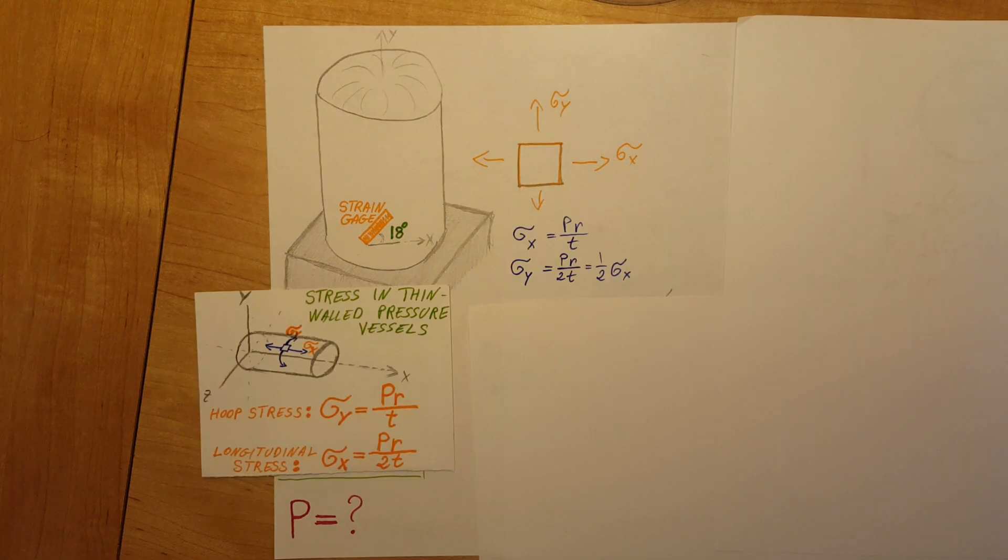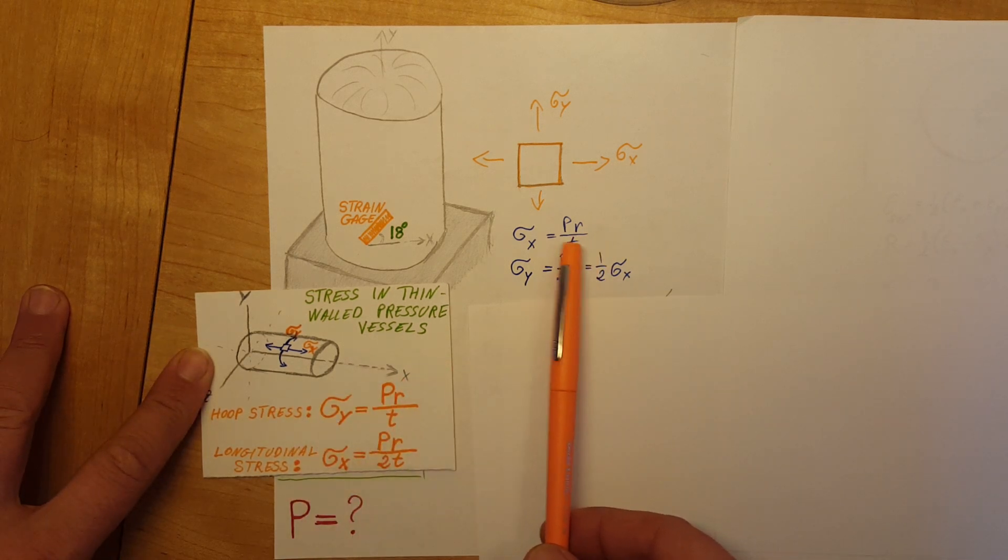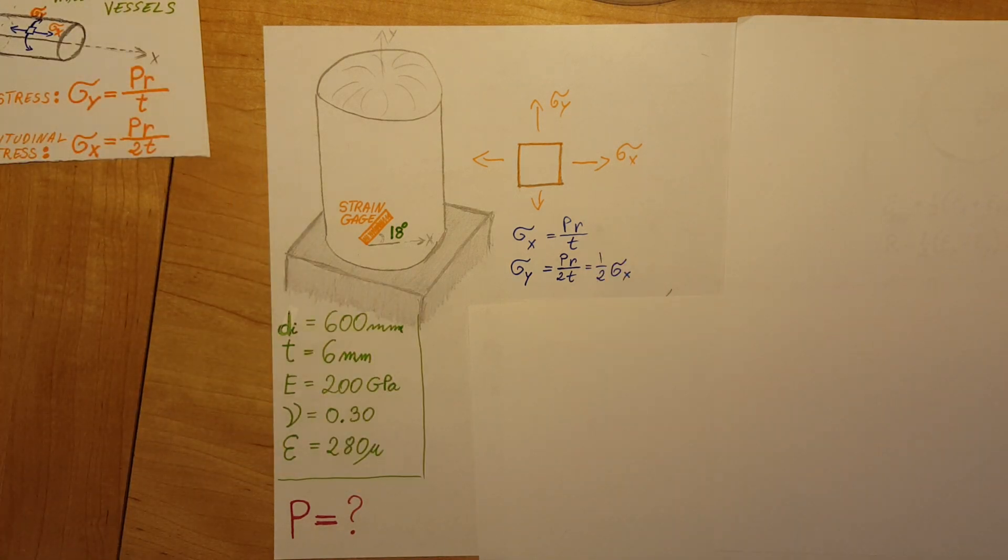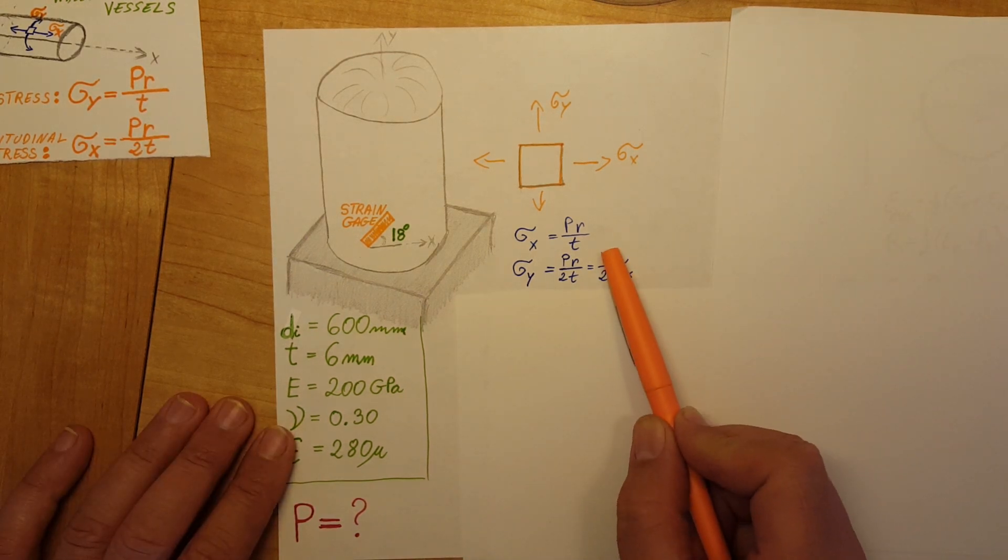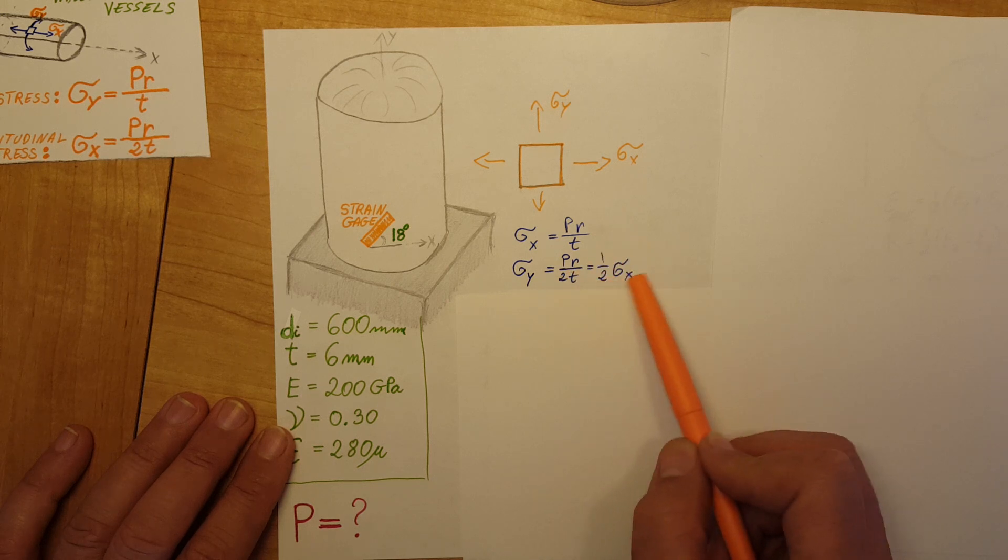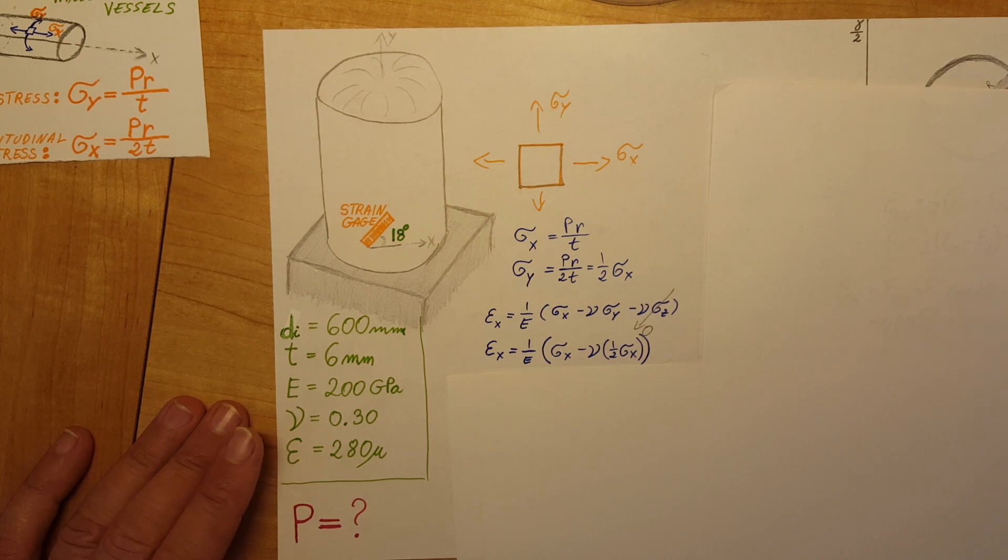Next, I transferred these formulas over here so I can see them better—the hoop stress and the longitudinal stress, because these are the ones we're going to start our calculations with. I marked one-half of the hoop stress here. I factored out the one-half so we can use it in a more efficient way later. Next, I'm going to use Poisson's ratio.